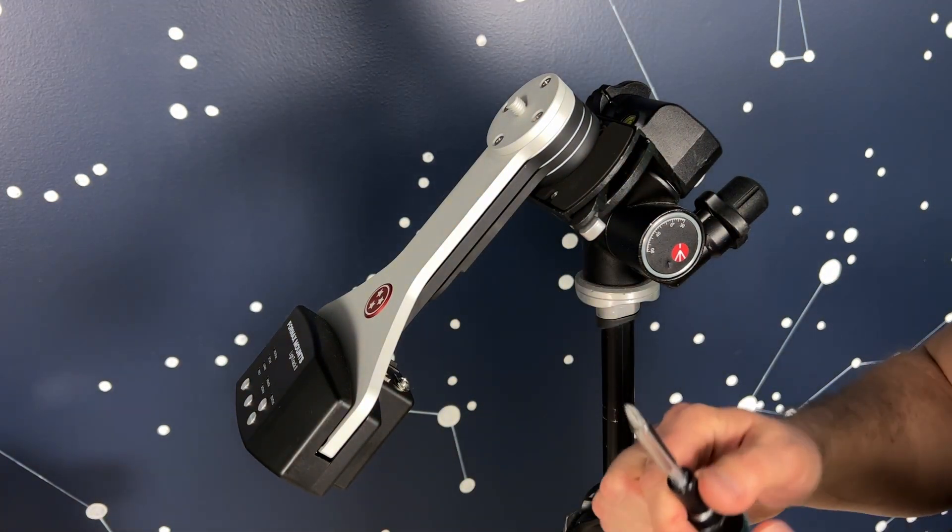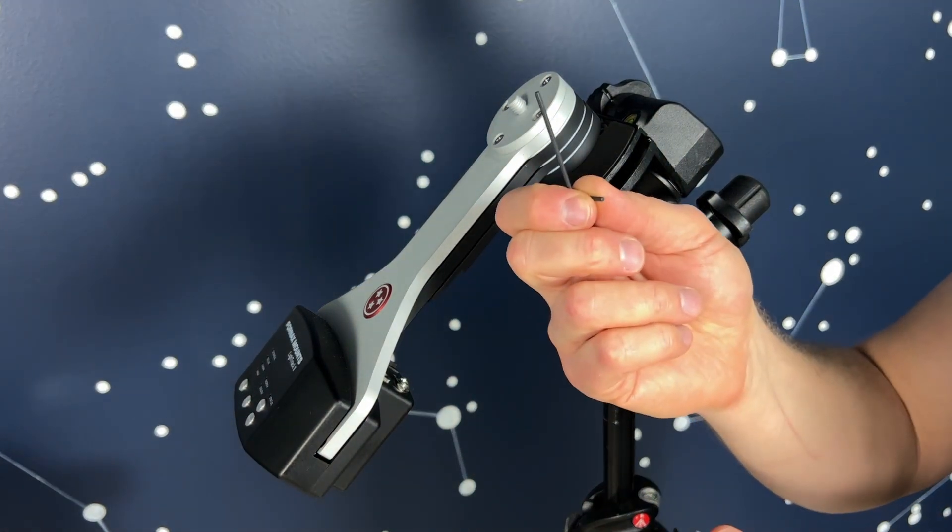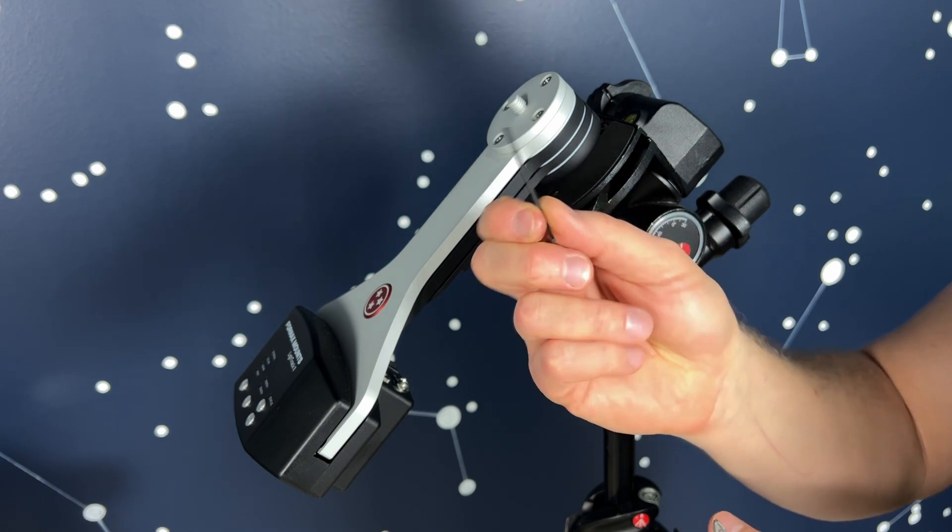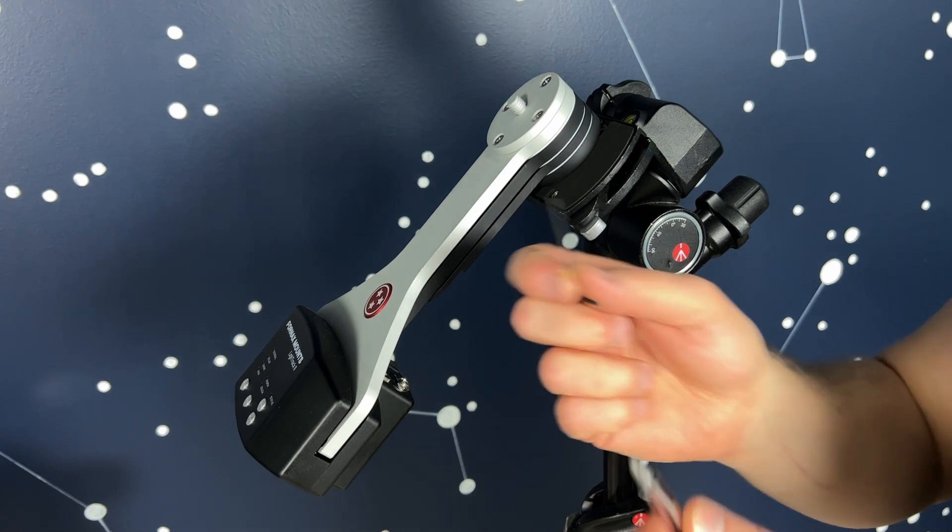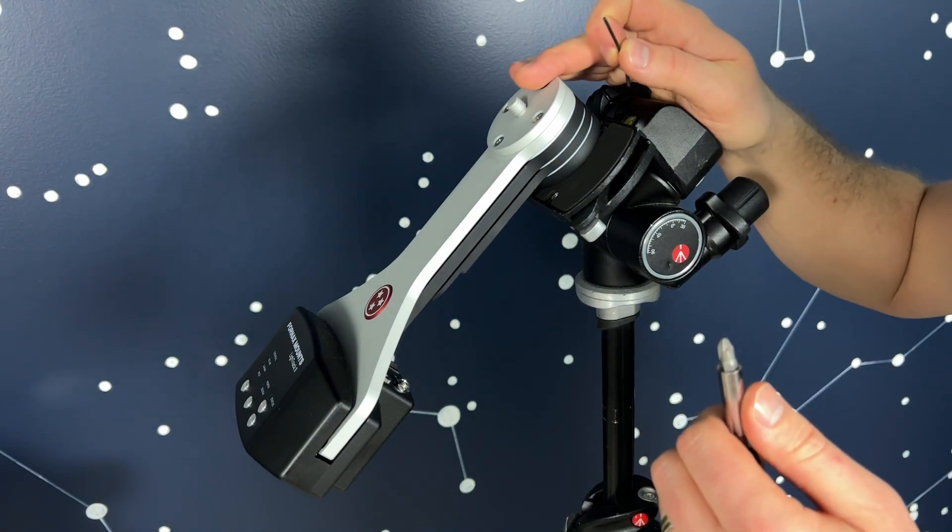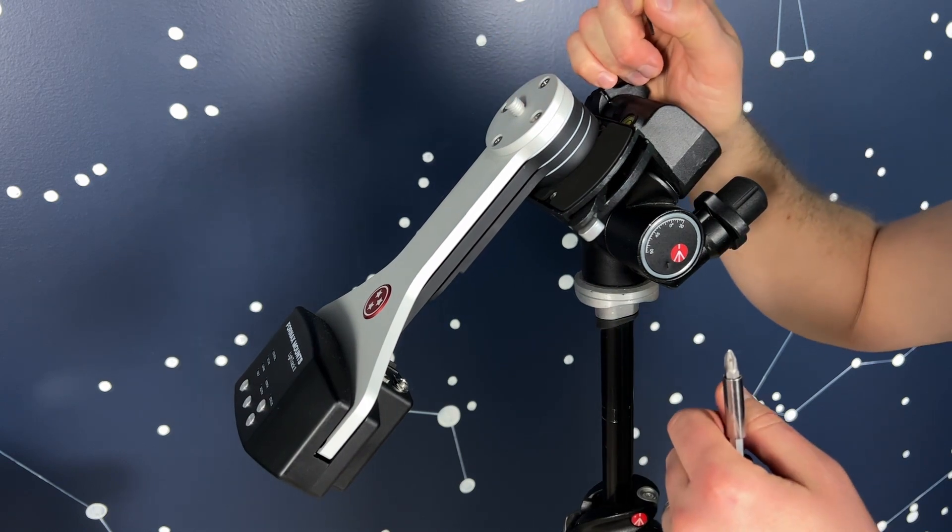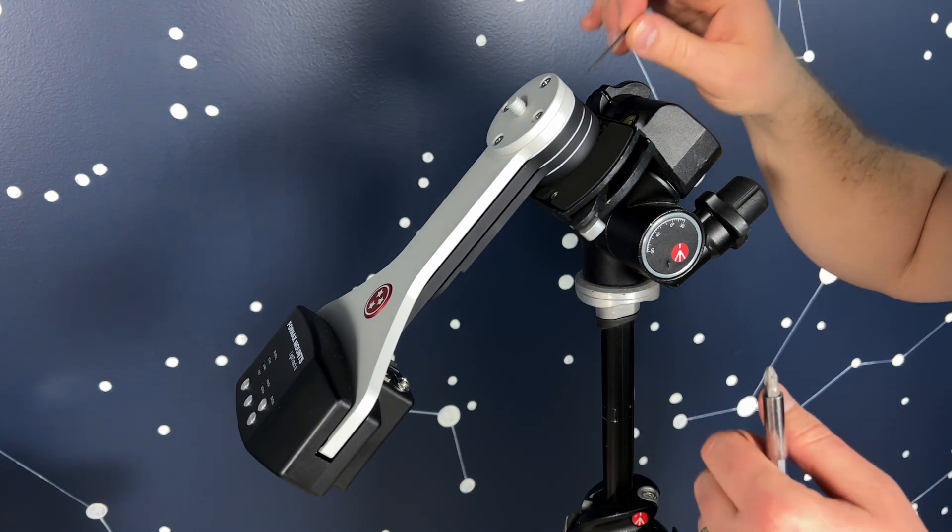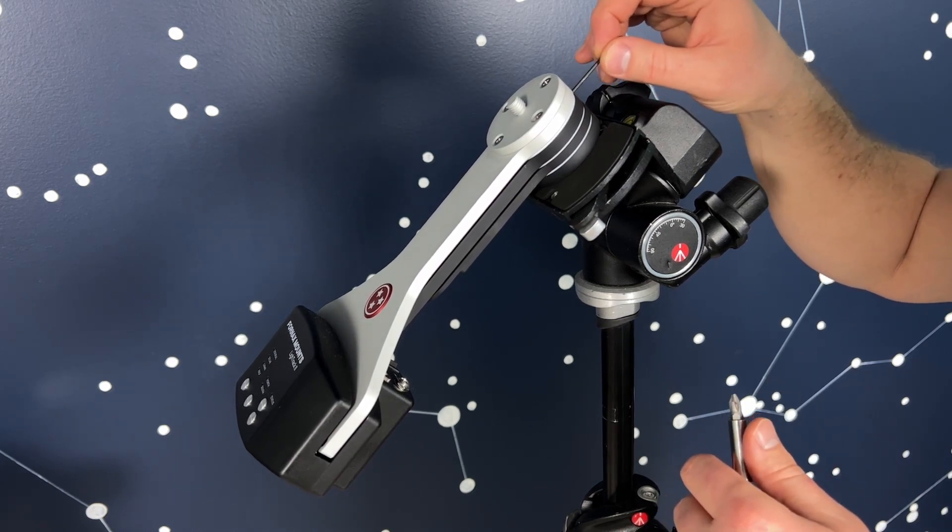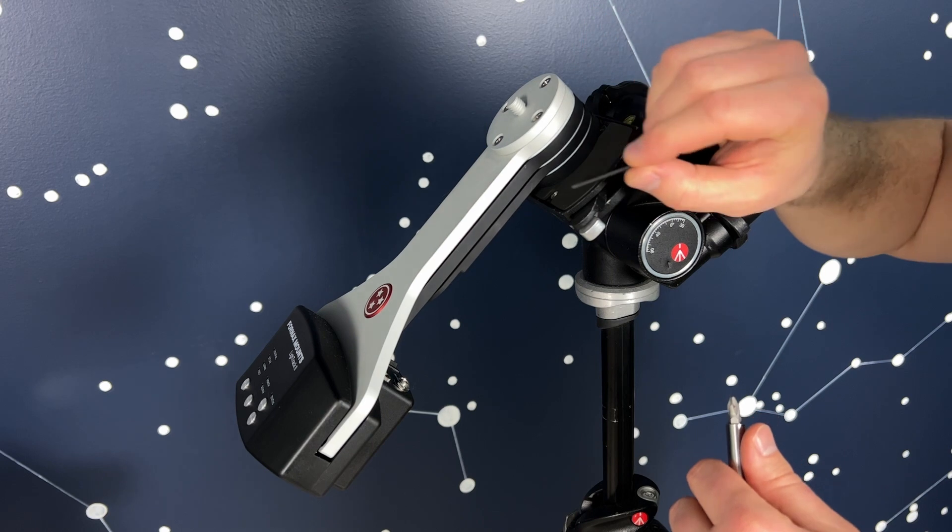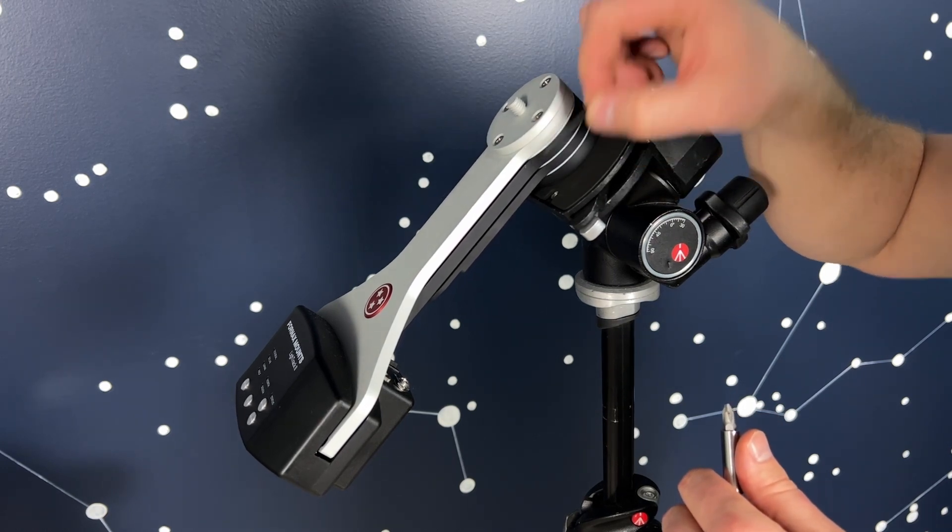You're going to need a Phillips head screwdriver, a number two millimeter Allen key, and either another Allen key or Phillips head depending on your mount, the age of the mount, and the screw that's hiding underneath here. In the more recent light track twos there is one hole at the top of the mount here, and in some of the older ones there will be three: one here, one right here, and then one on the other side.